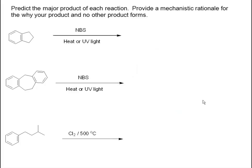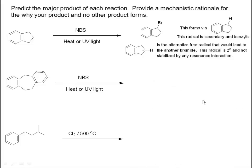Predict the major product of each reaction and provide a mechanistic rationale. These reactions replace hydrogen with bromine or chlorine. From the previous chapter, NBS takes the allylic hydrogen and selectively replaces it with bromine. The same happens here — we replace the benzylic hydrogen with bromine. The product arises from bromine reacting with the secondary benzylic radical, which is better than the alternate merely secondary radical.